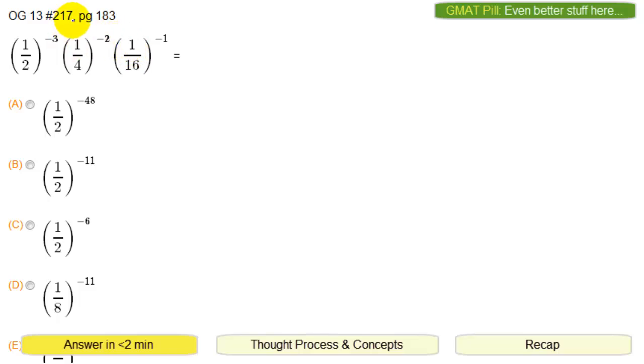This is number 217. We have an expression. They're all in halves, quarters, and sixteenths with negative exponents.